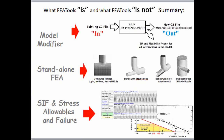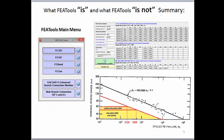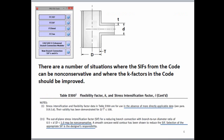Let's start with the CIF and stress calculator, which we call PRGIK. The PRGIK spreadsheet is available from the bottom of the FEA tools main menu and lets the user produce either CIFs and K factors or stresses and allowables. There are a number of situations where the CIFs from the code can be non-conservative and where the K factors in the code should be improved.